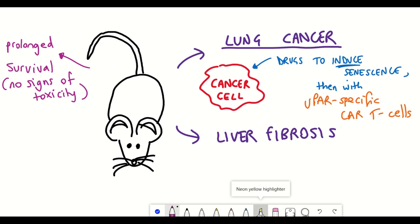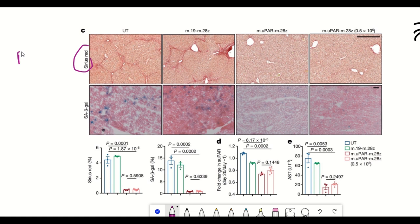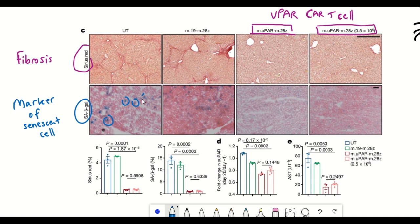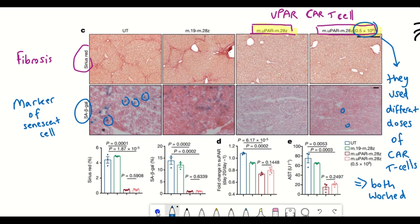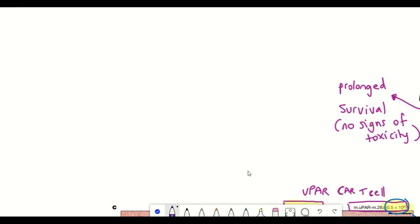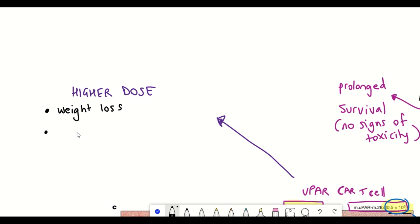Besides cancer, senescent cells have also been shown to contribute to fibrosis. They looked at the impact of CAR T-cells targeting senescent cells in mouse models of liver fibrosis. The results showed that mice treated with uPAR-targeting CAR T-cells had a reduction in the level of fibrosis and also in the level of senescent cells, suggesting these CAR T-cells were effective at removing senescent cells in the liver. They tried two different doses: the lower dose kept mice highly active during treatment, while the higher super-therapeutic dose produced hypothermia, weight loss, and elevated cytokines such as interleukin-6, suggestive of CAR T-cell-associated cytokine release syndrome. Since the lower dose was still effective, this may not be a major issue.